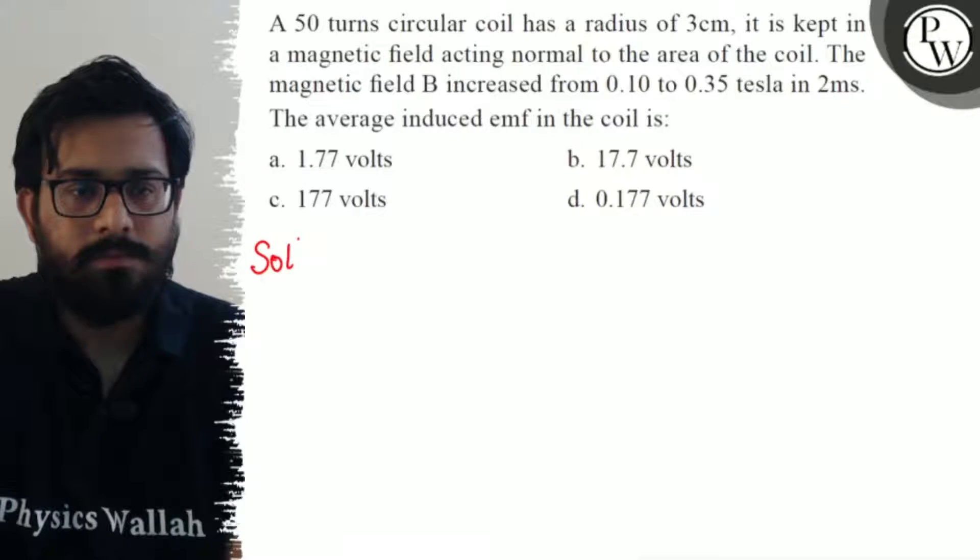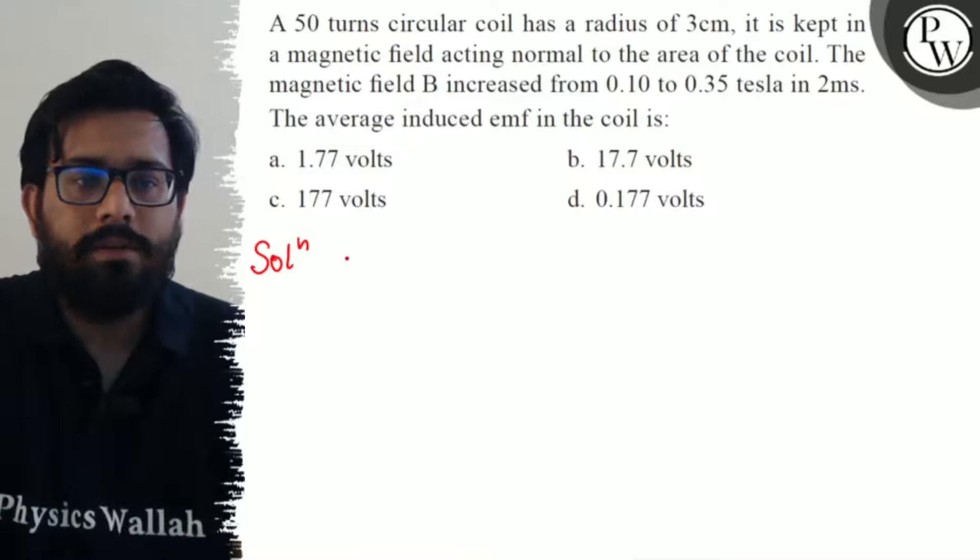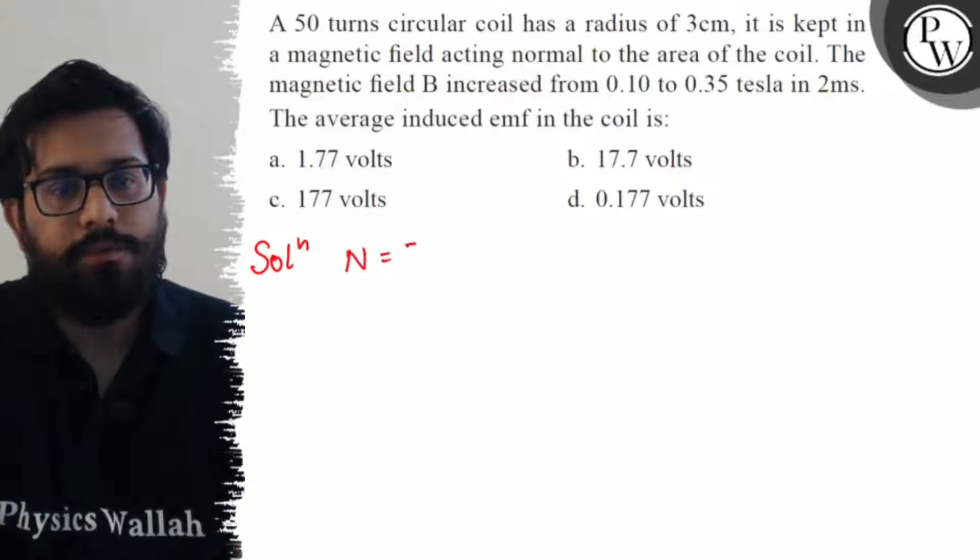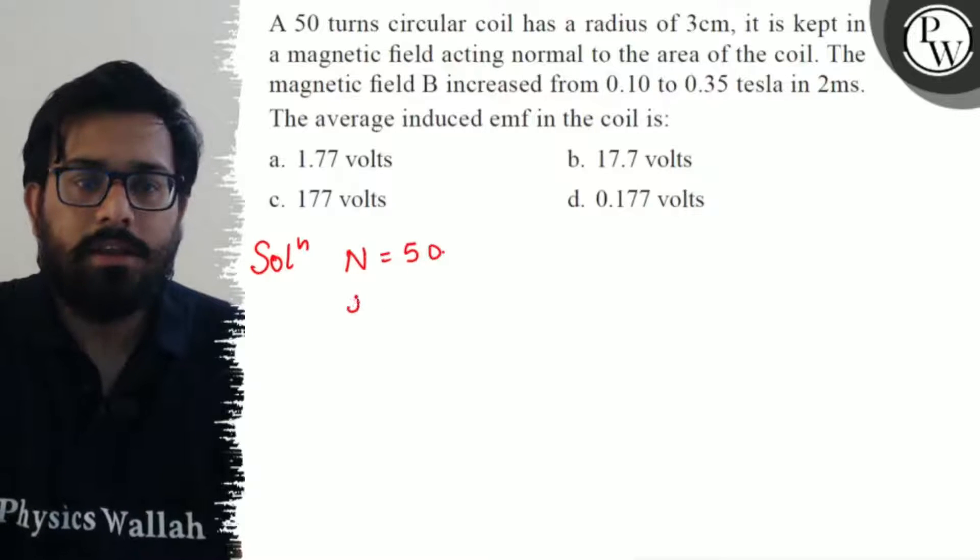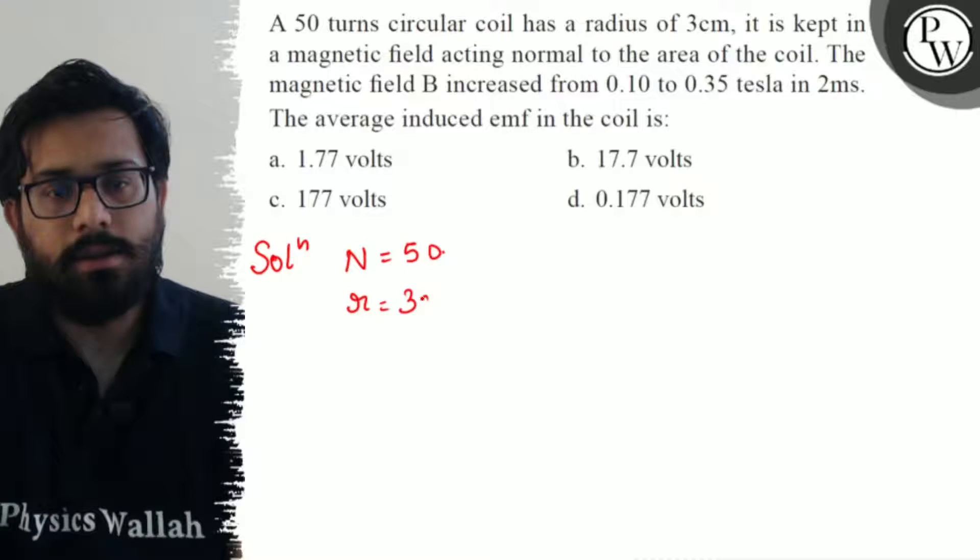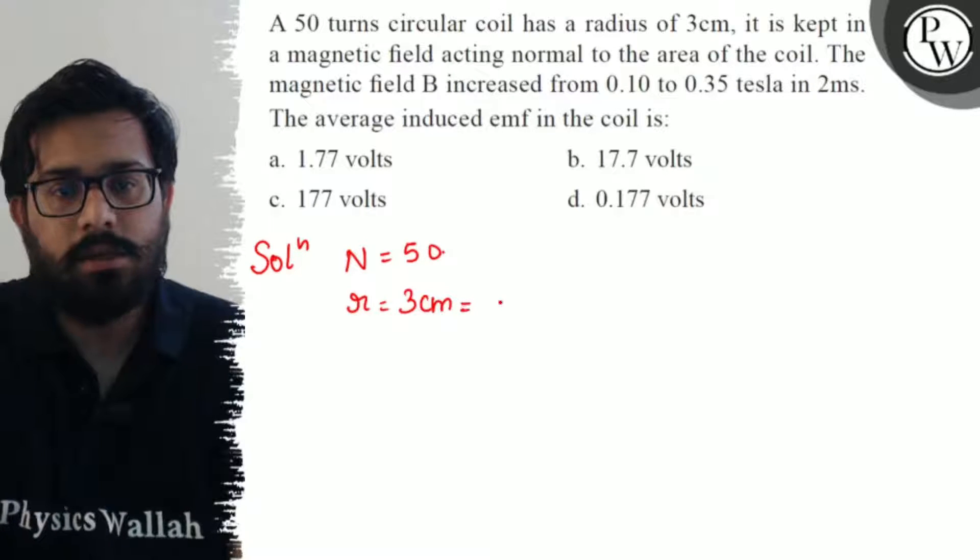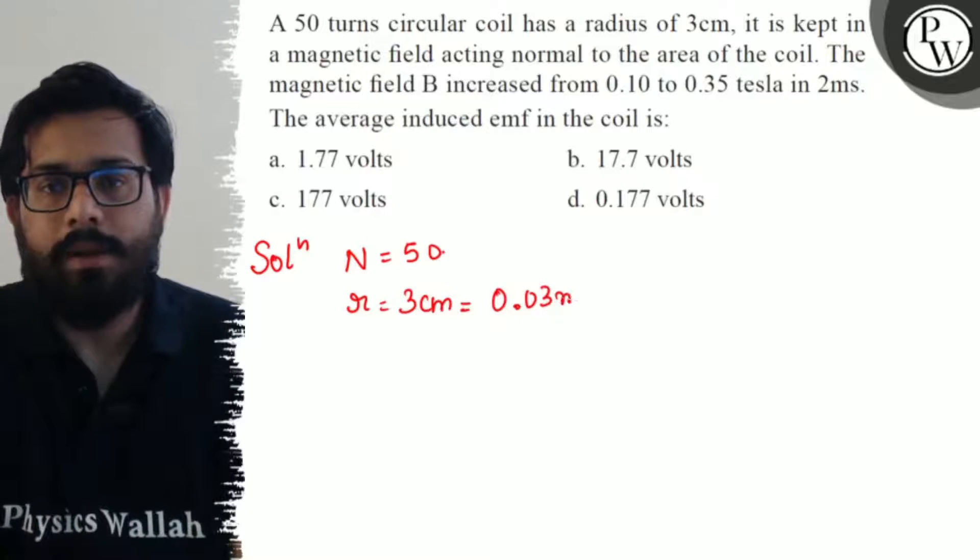Let's see the given data first of all. Number of turns is 50, having a radius of 3 cm. Converting it to meters, it comes out to be 0.03 meters.